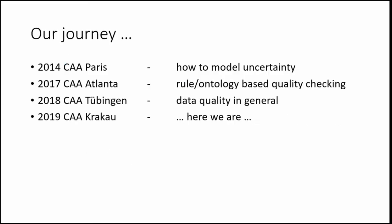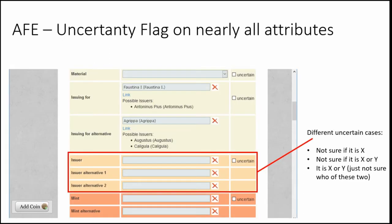This was our journey — well, Carsten's journey mainly — through what we want to talk about: uncertainty and cleaning data. At CAA in Paris 2014, Carsten looked at how to model uncertainty. Then two years ago at Atlanta he talked about ontology-based quality checking, and last year at Tübingen we had a session on data quality in general. Today I'm going to be presenting two projects that Carsten works on.